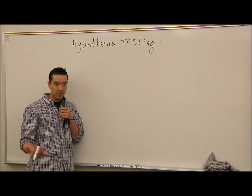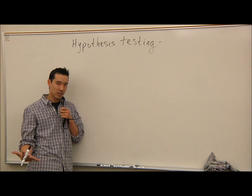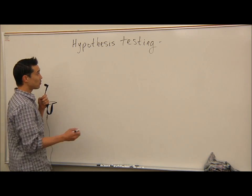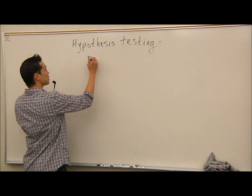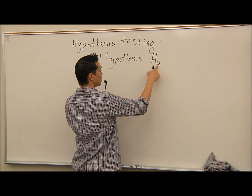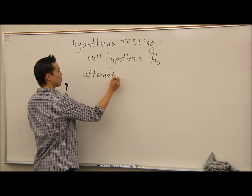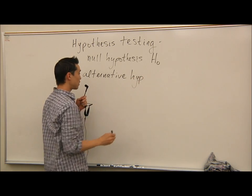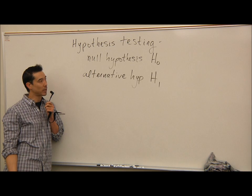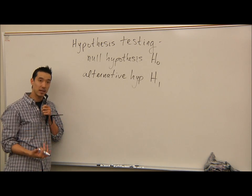Hopefully with our hypothesis testing, it's going to tell us whether we accept that the medicine is working, or we're not sure — there's not enough evidence — so we reject it. The first step in any hypothesis test is to state the null hypothesis and the alternative hypothesis. The null hypothesis is abbreviated H0 or H-naught. The alternative hypothesis is abbreviated H1, though some books use HA. Your very first step is to correctly state H0 and H1.